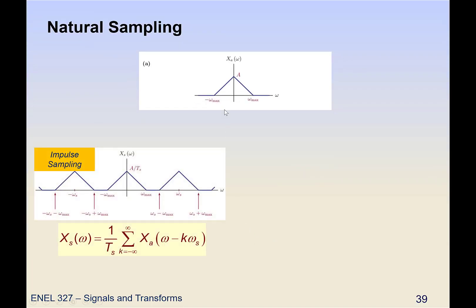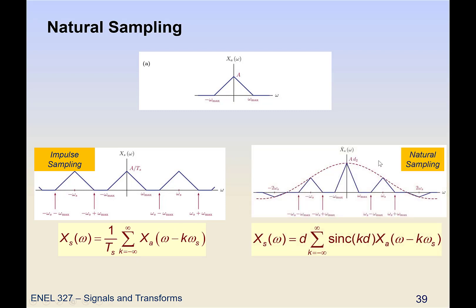So if we think of what happened when we did impulse sampling, we took this spectrum and then we get multiple copies. And that's the mathematical description of it. If we do pulse or natural sampling, what we actually get is those shifted copies, but their amplitudes are actually scaled by a sinc function.